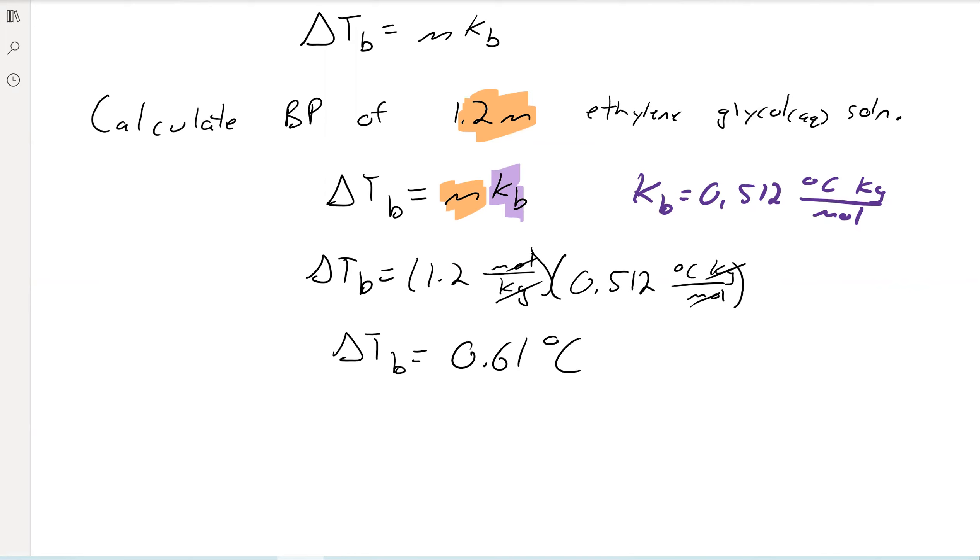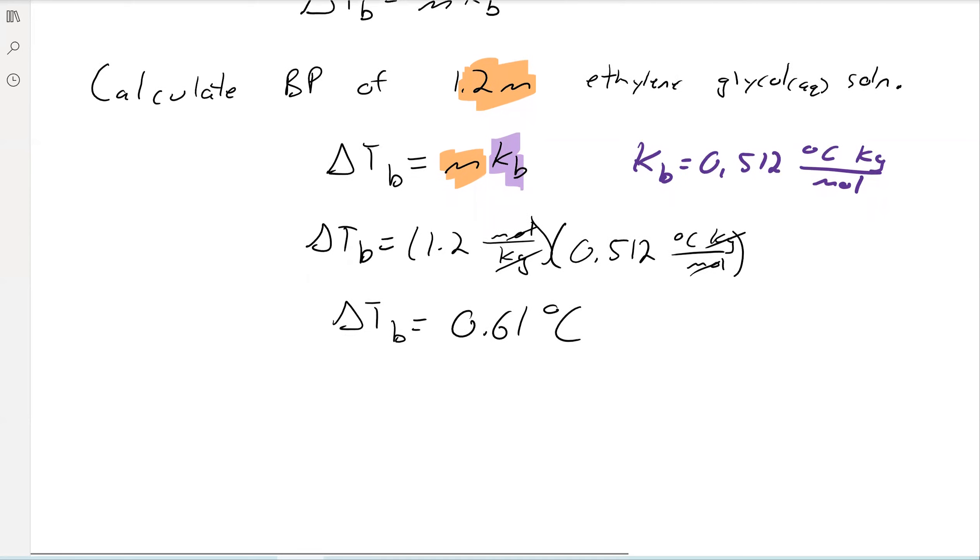Now this is where students oftentimes make a bit of a blunder here. And a lot of students will tell me, oh, the freezing point of the salt water is 0.61 degrees Celsius. That doesn't make any sense, right? Water normally boils at 100 degrees Celsius. How would adding a little bit of salt make it boil at less than one degree Celsius, right? We'd all be dead if that was true.